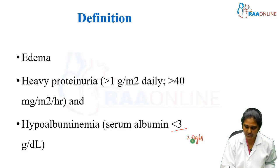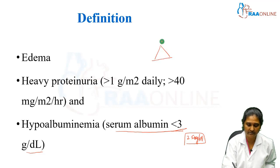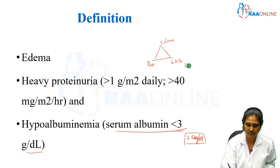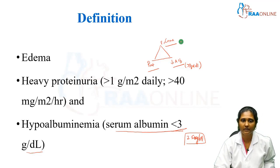Now it has been changed. It is now serum albumin less than 3 grams per deciliter. So it is a triad of clinical findings with edema, proteinuria, and hypoalbuminemia. This change — more than 3 grams per deciliter — you should be knowing. This is regarding the definition of nephrotic syndrome.